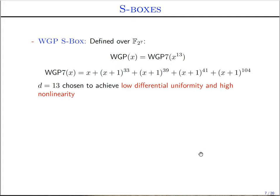The first s-box is the WG permutation s-box, defined over GF(2^7) by the equation WGP_7(x)^13, where WGP_7(x) consists of five power terms. In hardware, all these power terms can be computed easily in terms of normal basis multiplication. We chose the exponent d=13 to achieve lower differential uniformity and higher nonlinearity for the s-box.